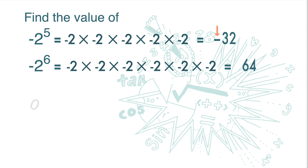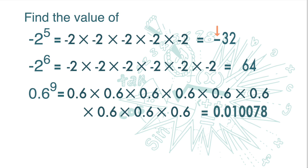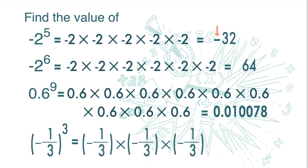Find the value of 0.6 to the power of 9, which equals 0.6 multiplied by itself 9 times. For this, we can use the calculator to help us, and we get 0.010078. And for this one: negative 1 over 3 to the power of 8. The answer is negative 1 over 27.